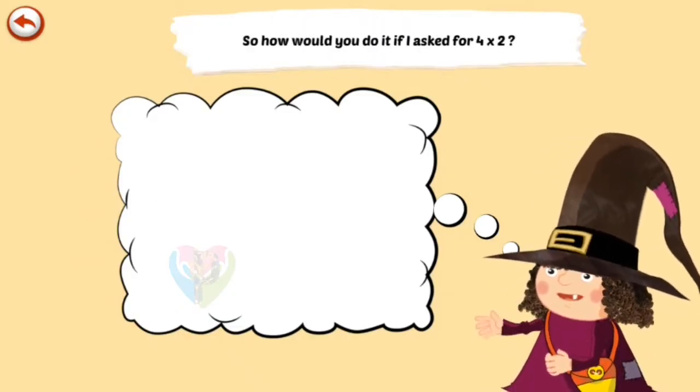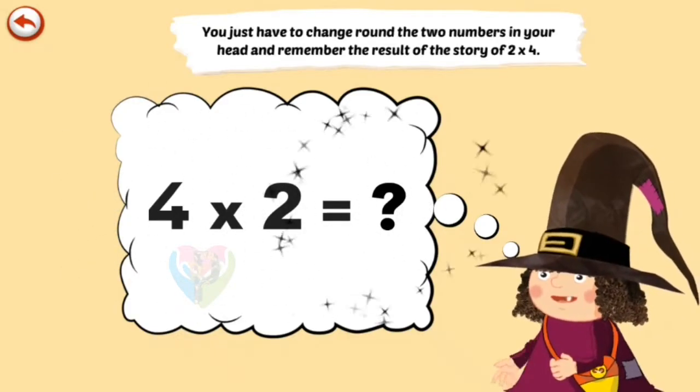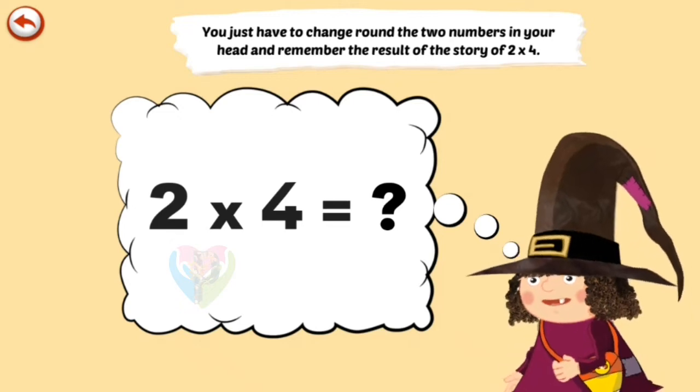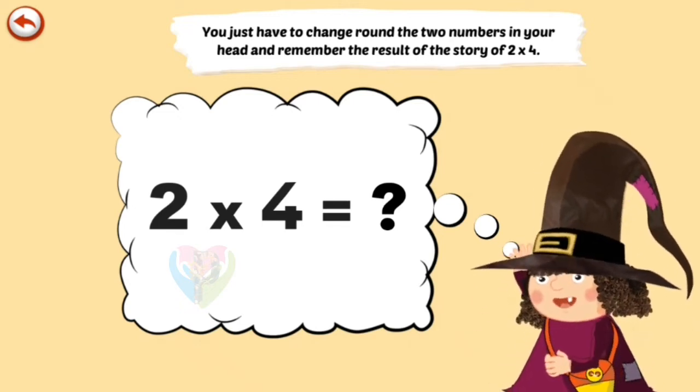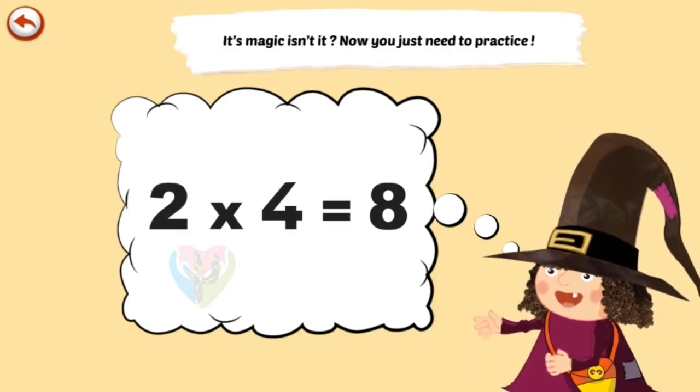So how would you do it if I asked for 4 times 2? You just have to change around the two numbers in your head, and remember the result of the story of 2 times 4. It's magic, isn't it? Now you just need to practice.